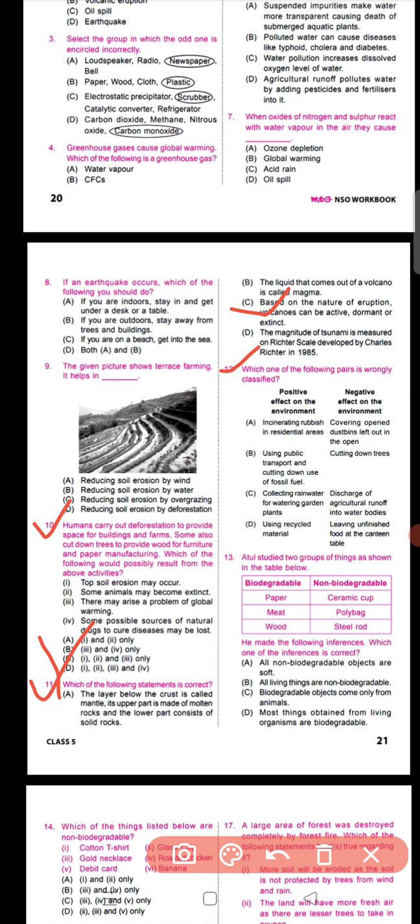Question number twelve says: which of the following pairs is wrongly classified regarding positive and negative effects on the environment? The wrong classification is option A, because incinerating rubbish in residential areas has a negative effect on the environment as it releases harmful gases. Covering open dustbins has a positive effect as it prevents insects like flies and mosquitoes from spreading diseases.